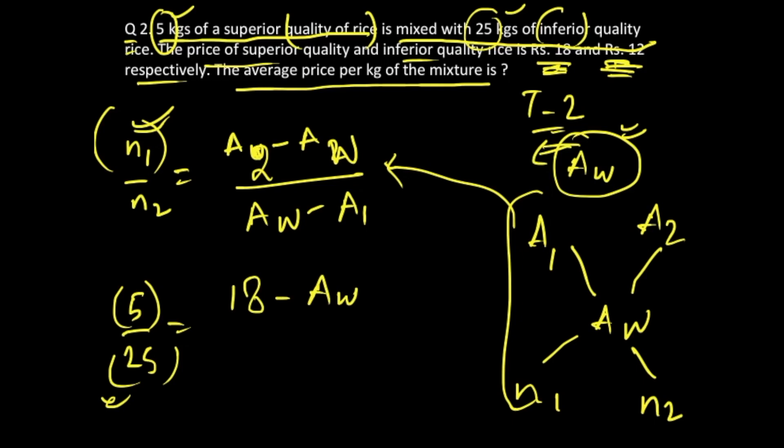First of all cancel this particular fraction. This becomes 1 upon 5. By cross multiplication you will get AW minus 12 equal to 18 times 5, which is 90 minus 5 AW.